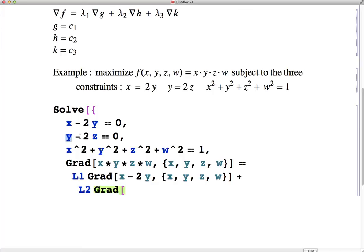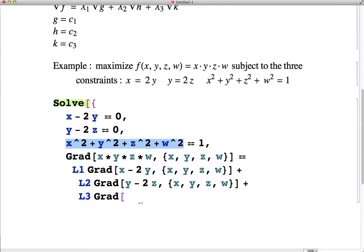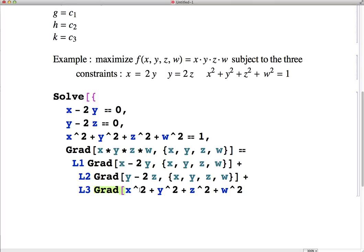So h is y minus 2z. x, y, z, w are the variables. And then our third constraint is, so this is going to be our k. x squared plus y squared plus z squared plus w squared. And then again, that variable is x, y, z, w.